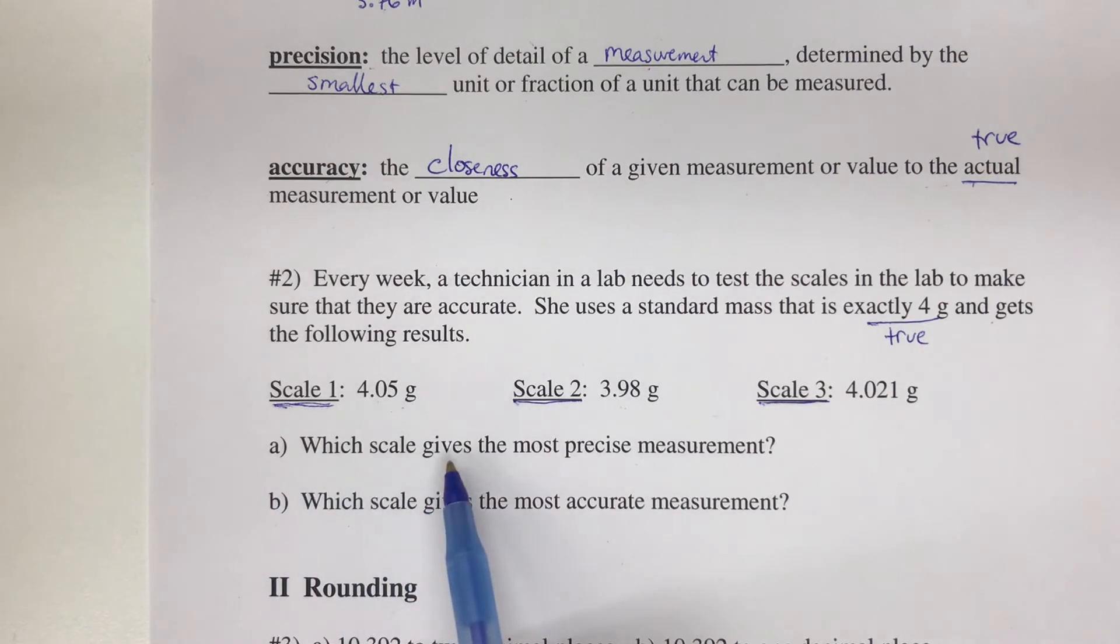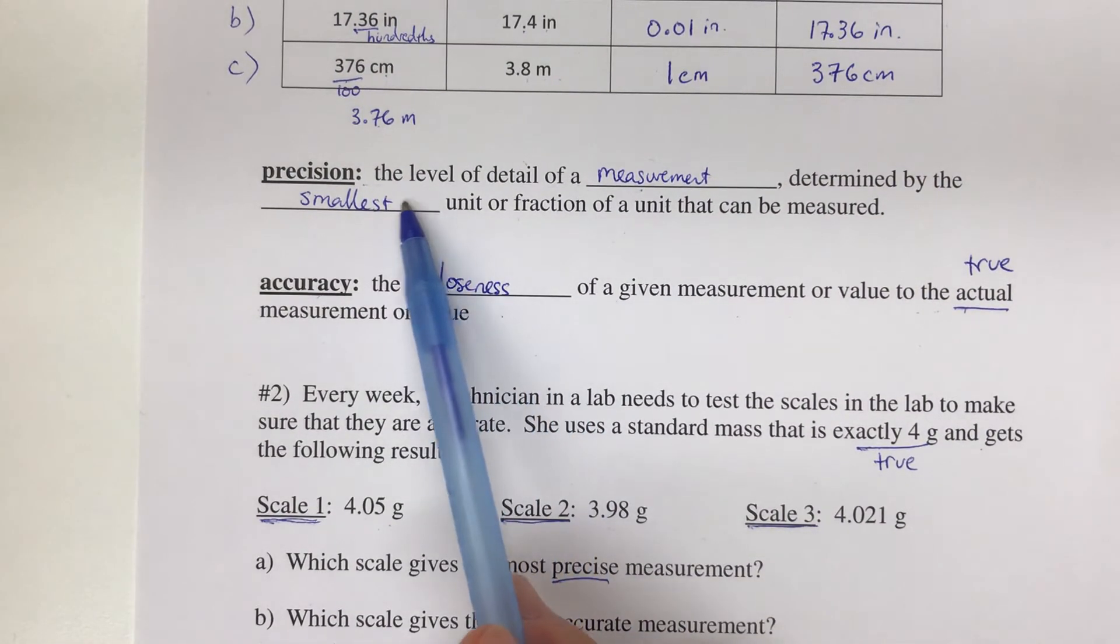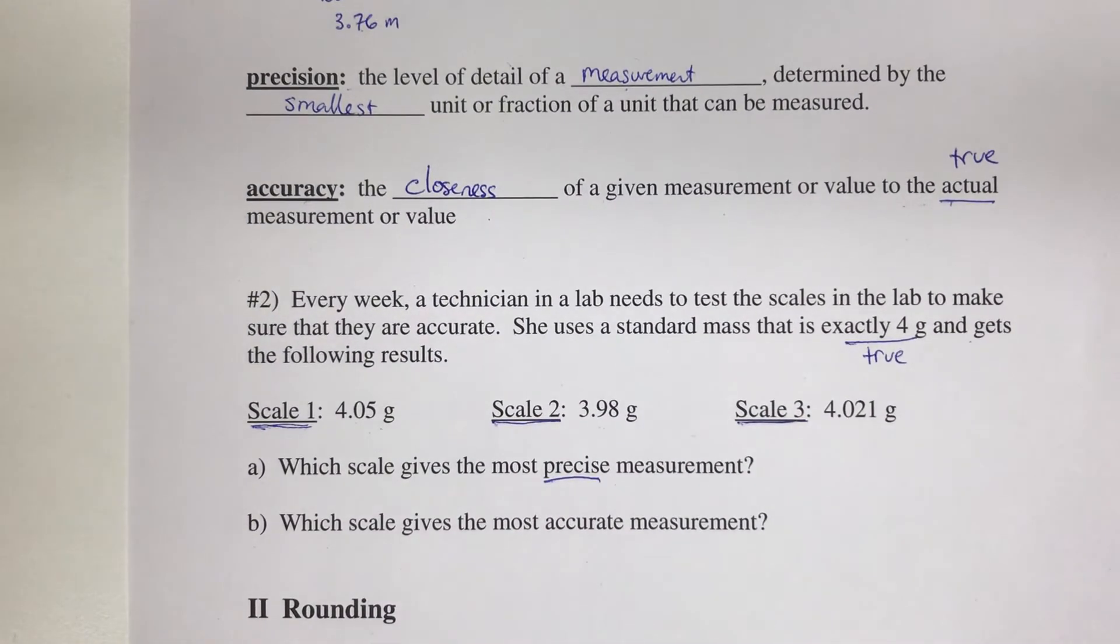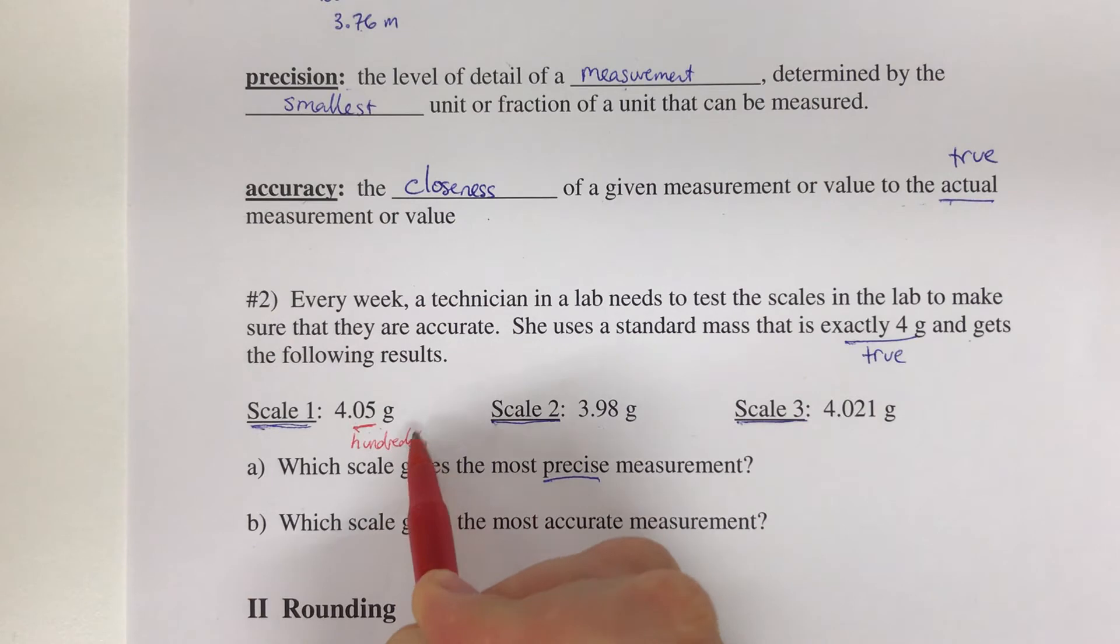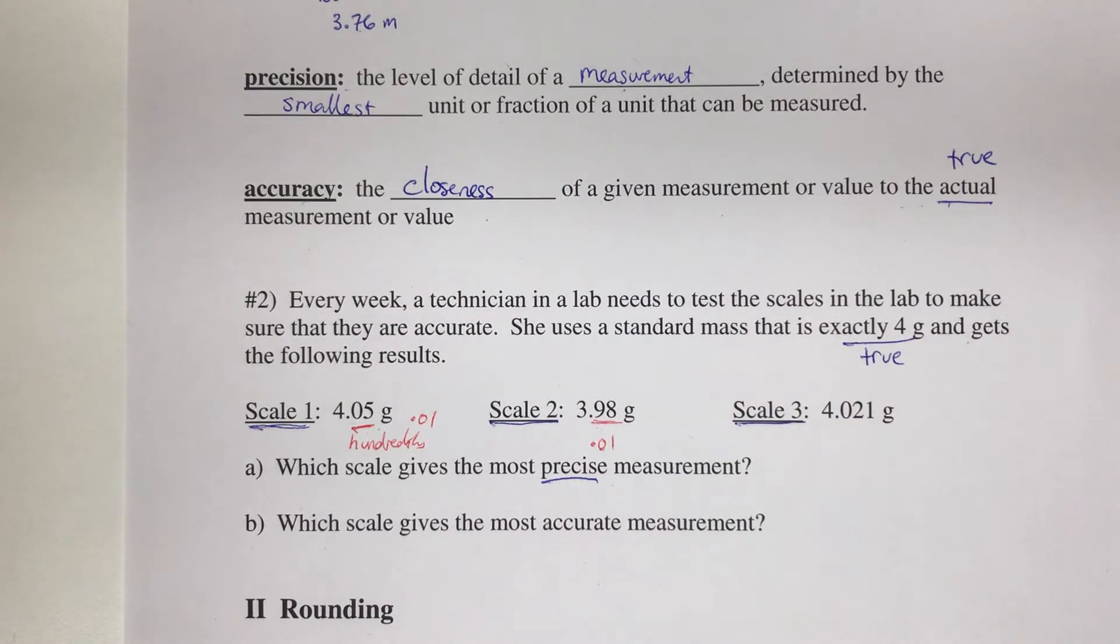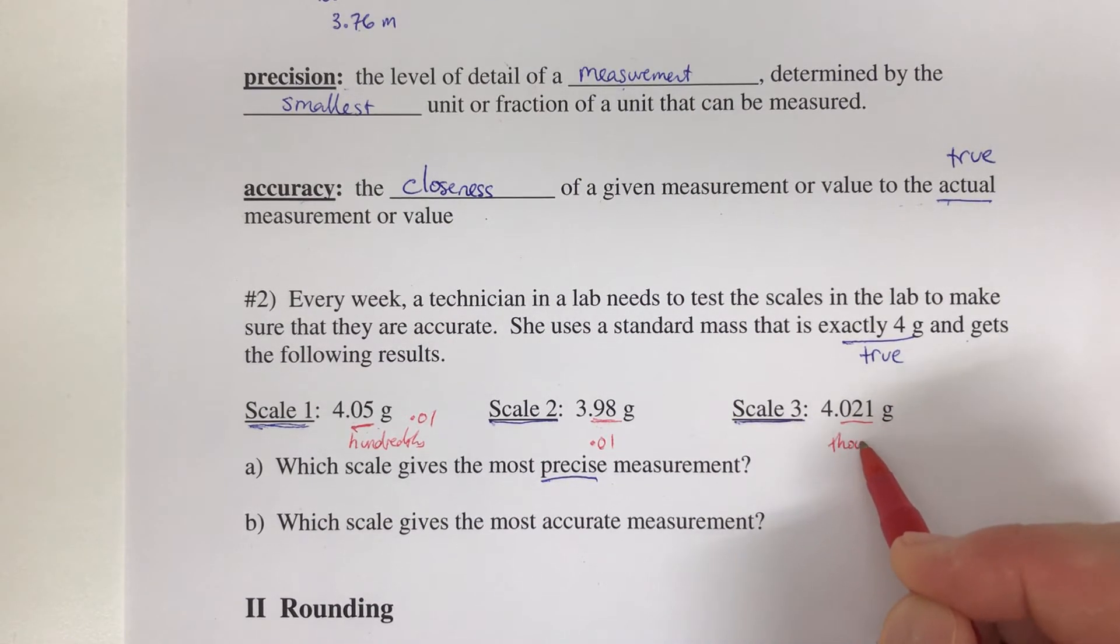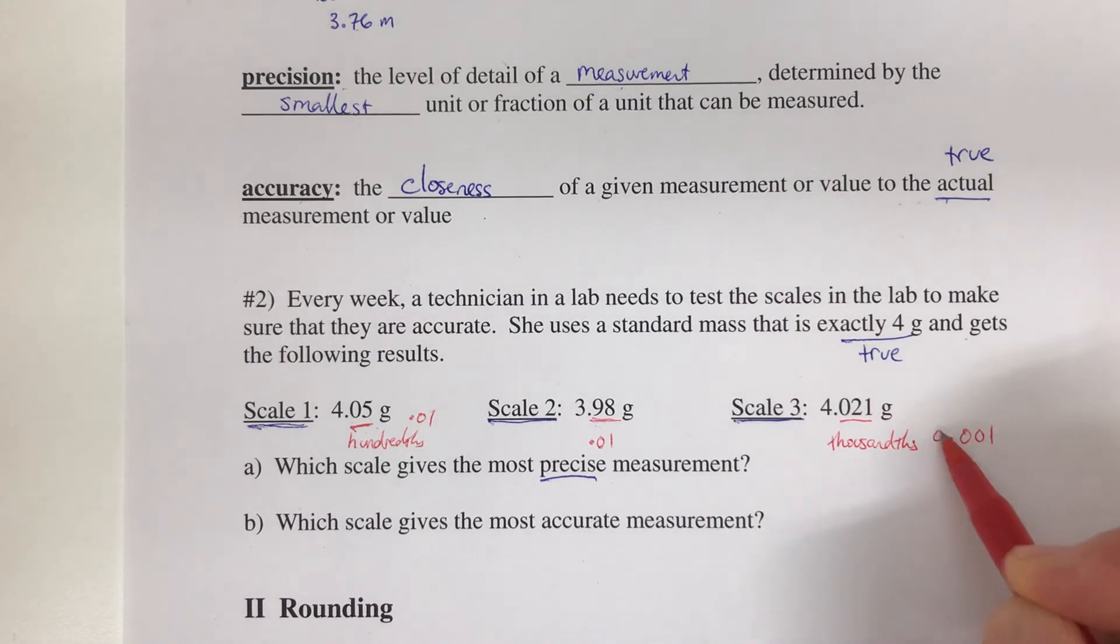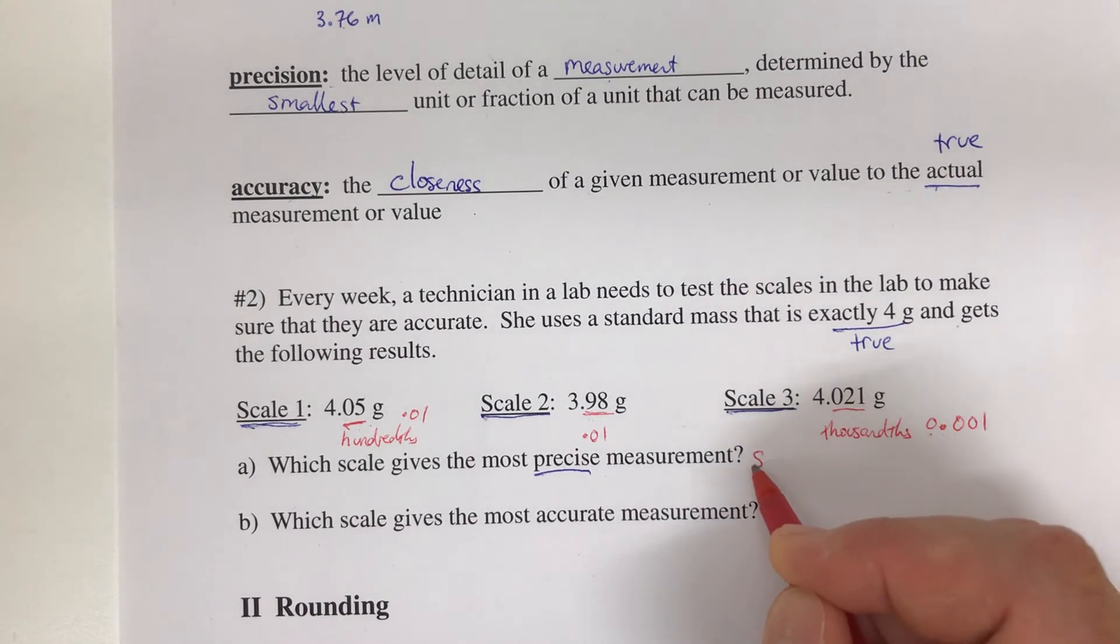Question a asks which scale gives the most precise measurement. We're looking for the smallest unit. 4.05 goes to the hundredths place, so that's 0.01 as the unit. Scale 2 also goes to 0.01. But Scale 3 has three decimal places—this is called thousandths—and that unit is 0.001. The most precise measurement is Scale 3.